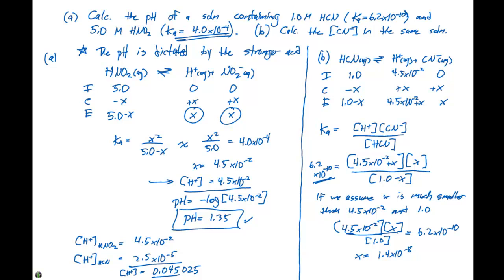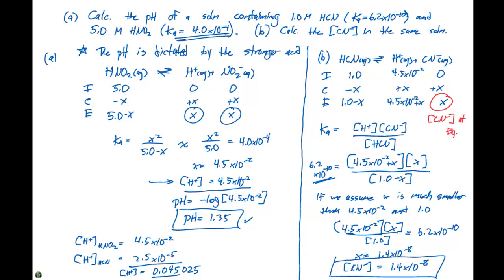Looking back at the ICE table, x equals the equilibrium concentration of CN minus, which is 1.4 times 10 to the minus 8. We can verify the approximation: 4.5 times 10 to the minus 2 plus 1.4 times 10 to the minus 8 is essentially 4.5 times 10 to the minus 2, and 1.0 plus 1.4 times 10 to the minus 8 is essentially 1.0. So the assumptions are valid, and the CN minus concentration at equilibrium is 1.4 times 10 to the minus 8 molar.